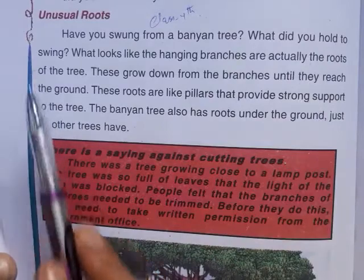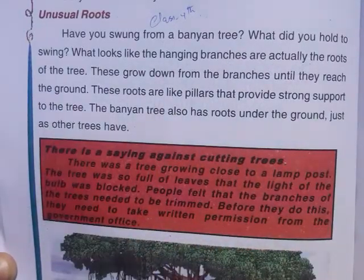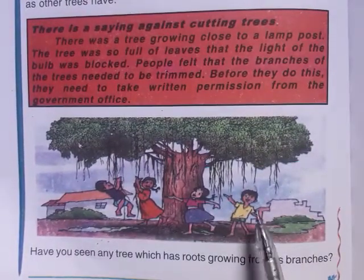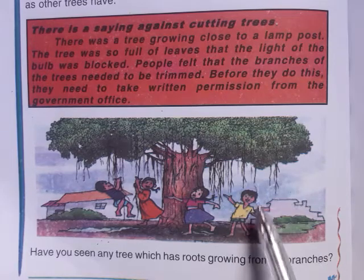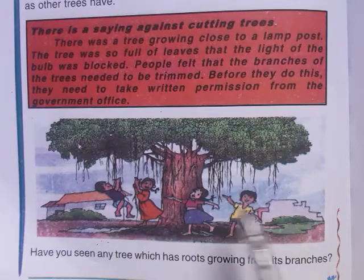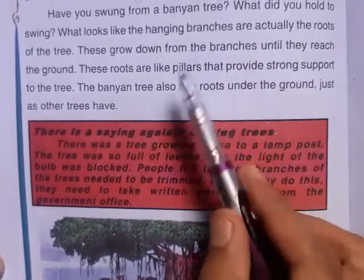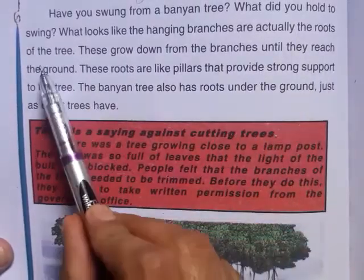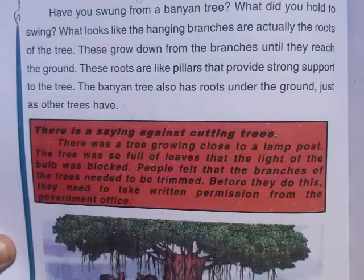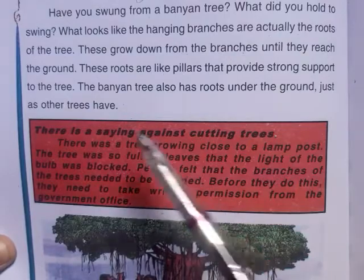What did you hold to swing? What looks like hanging branches are actually the roots of the banyan tree. These roots grow down from the branches — these are the unusual roots.